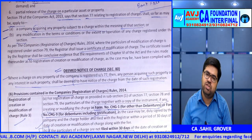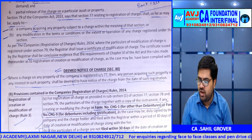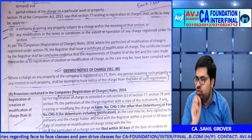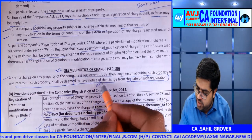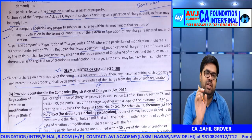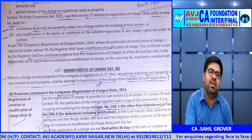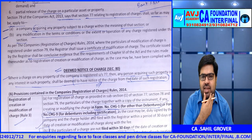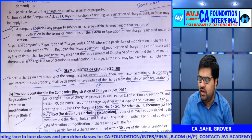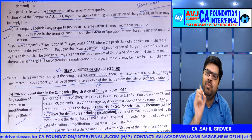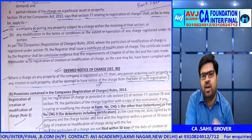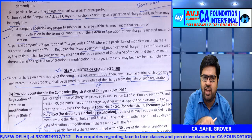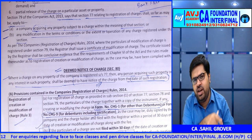Section 80 talks about deemed notice. Once a charge is registered, from the date of registration of that charge — not from creation — every person dealing with that property is deemed to have knowledge of that particular charge. For example, if the company sells a property on which a registered charge exists without informing the buyer, the buyer cannot later claim ignorance — Section 80 deems that everyone has notice. Section 77 covers registration; Section 78 covers charge holder registration; Section 79 covers two special cases; Section 80 covers deemed notice.